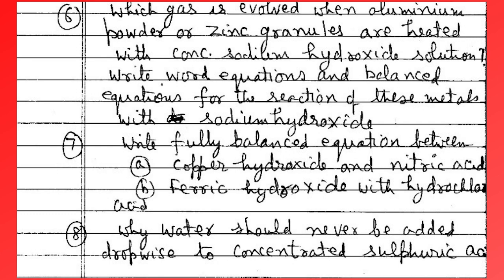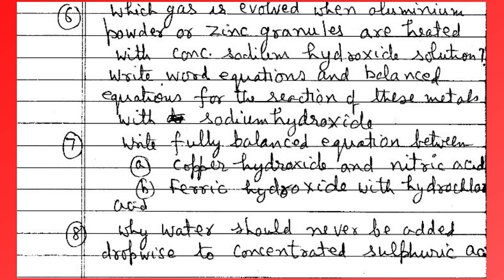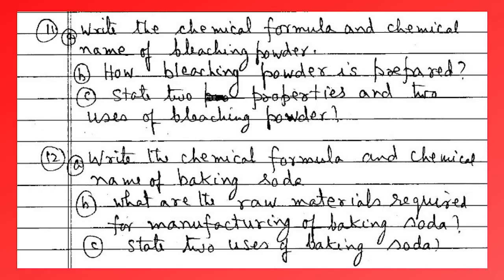Why should water never be added dropwise to concentrated sulfuric acid? Differentiate between strong acid and weak acids, and between strong electrolytes and weak electrolytes. Define family of salt, normal salt, and basic salt. Write the chemical formula and chemical name of bleaching powder. How is bleaching powder prepared? State two properties and two uses of bleaching powder.